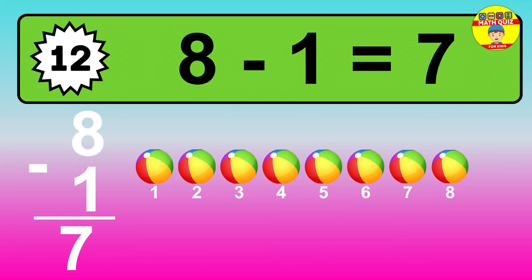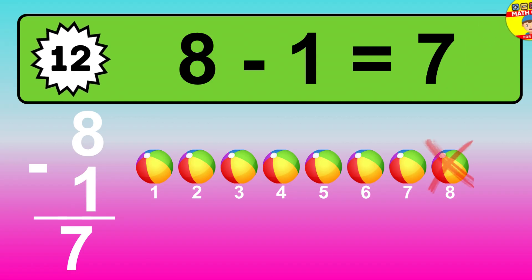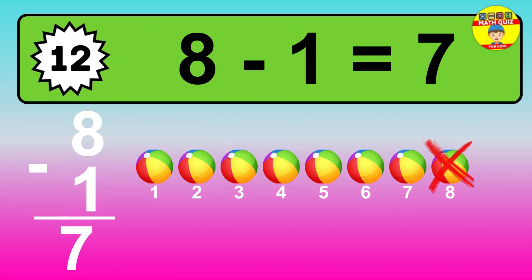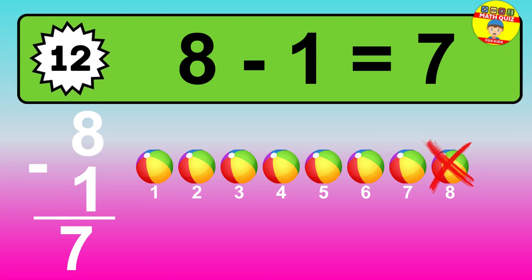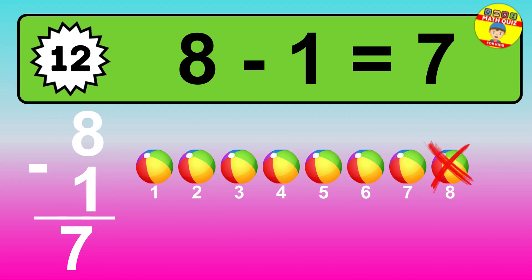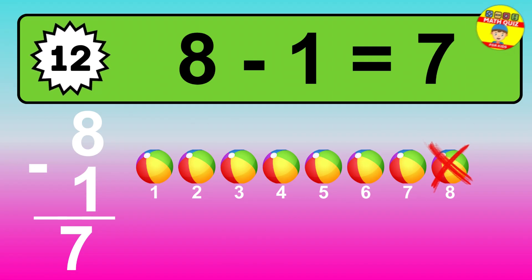Question 12: The answer is: 8 minus 1 is 7. Let's count it: 1, 2, 3, 4, 5, 6, 7.